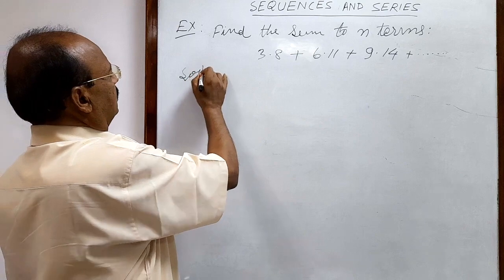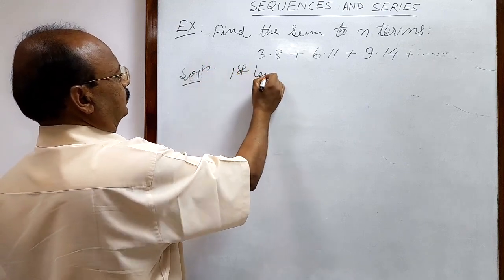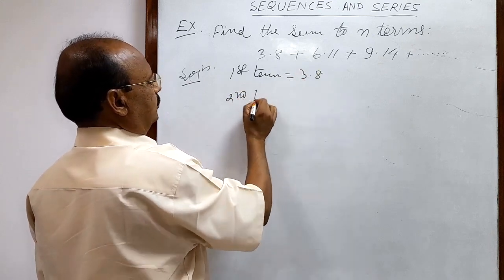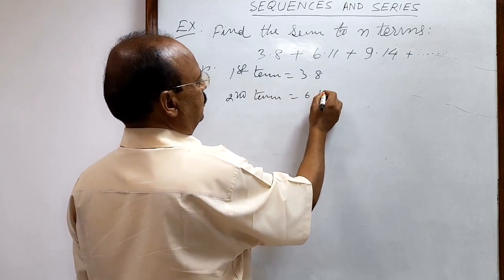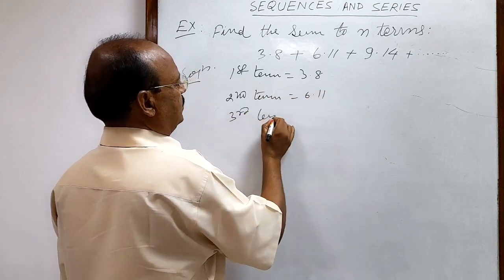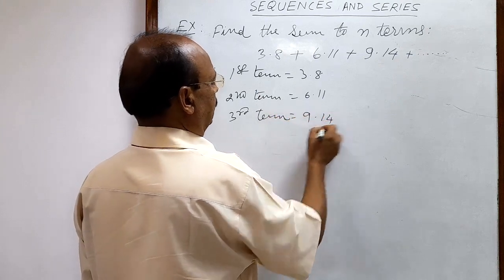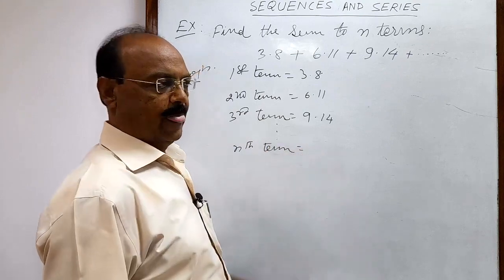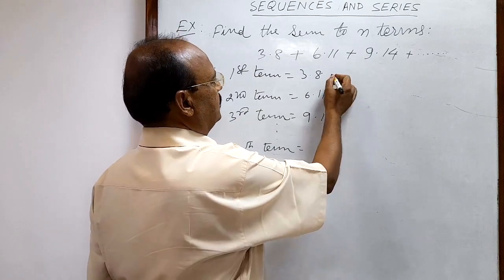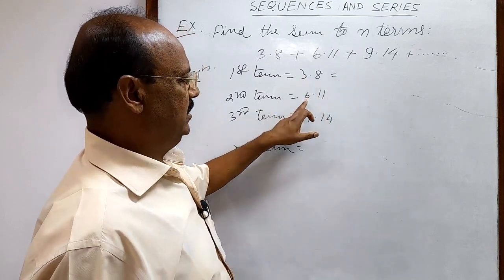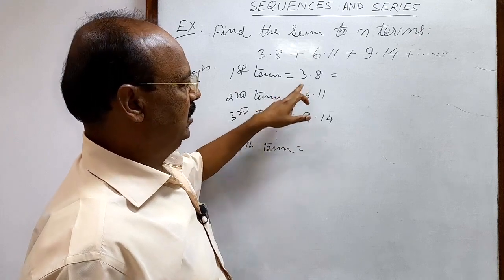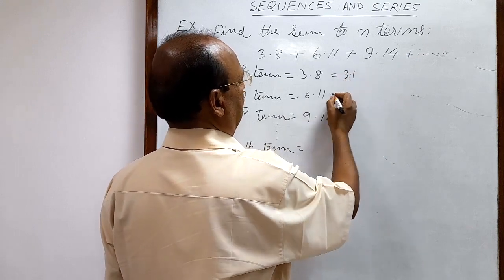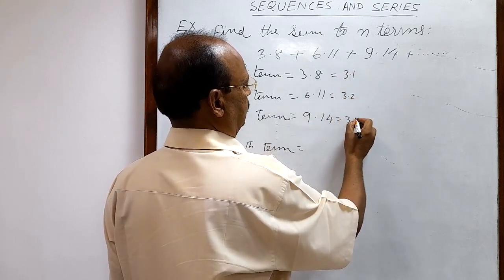The first term is 3×8, the second term is 6×11, the third term is 9×14, and so on. Looking at the first factor: 3, 6, 9 — this is 3×1, 3×2, 3×3, and so on.